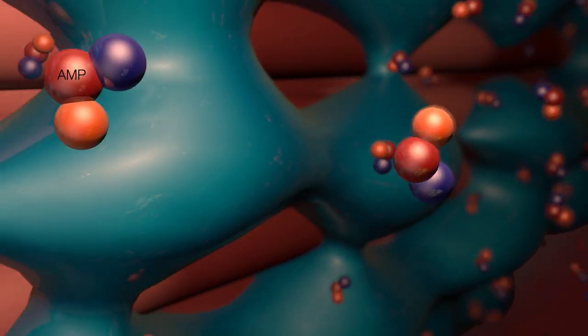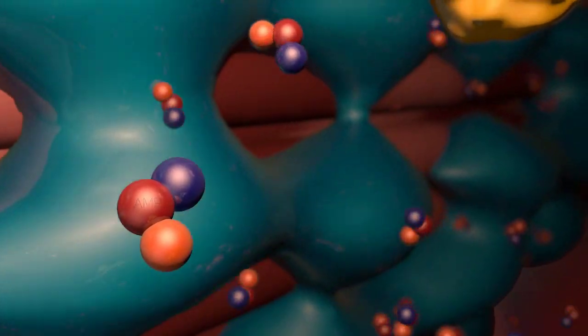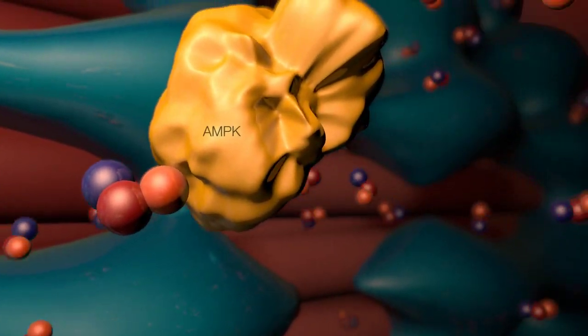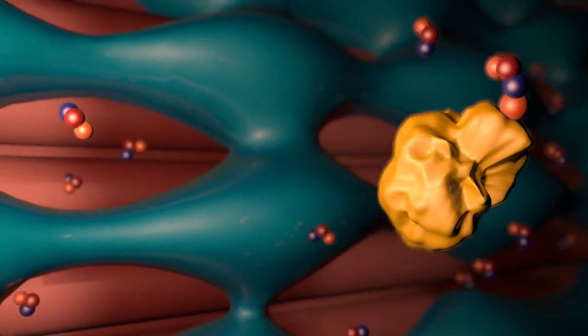The ATP is hydrolyzed immediately for energy, and the AMP attracts AMP-activated protein kinase, labeled AMPK.